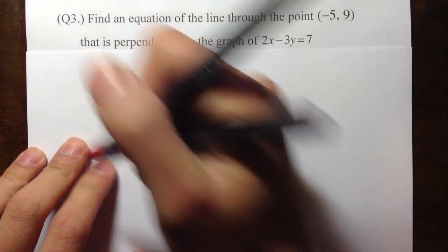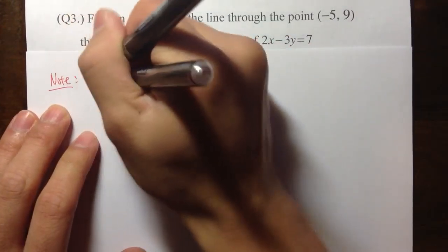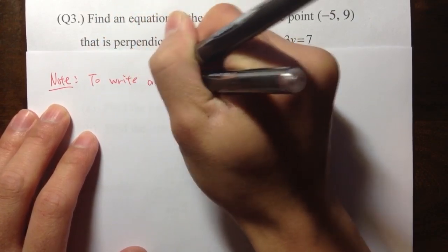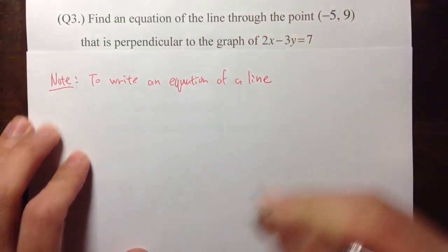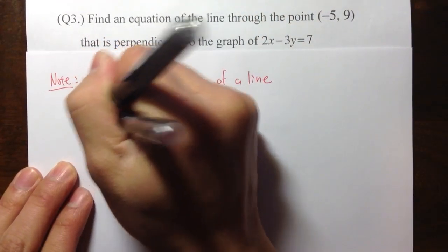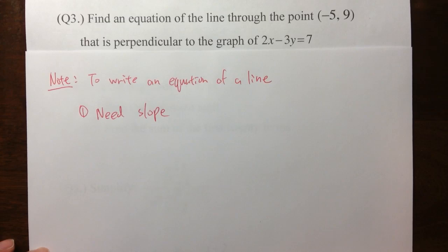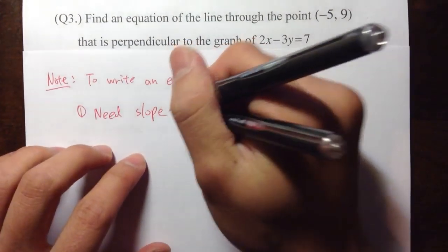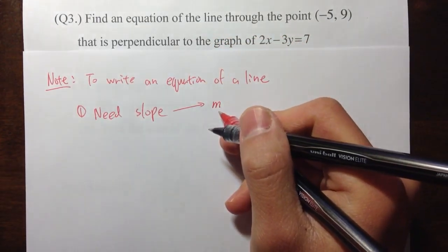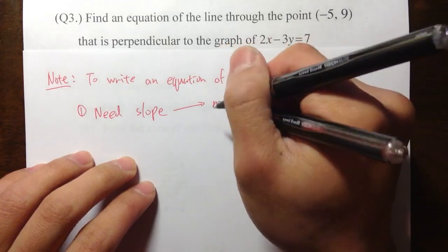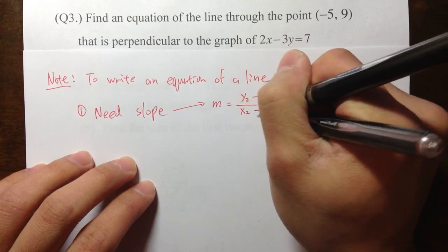Before I do anything, I would like to put on some notes for you guys. So what do we need to know about lines, especially to write an equation of a line? We need two things. First, we must have the slope. And how do we get a slope? There are a total of three ways that we have seen. The first one is to use a slope formula. Slope is usually denoted by m, and slope is equal to y2 minus y1 over x2 minus x1. When you have two points, then you can use this formula to find the slope.